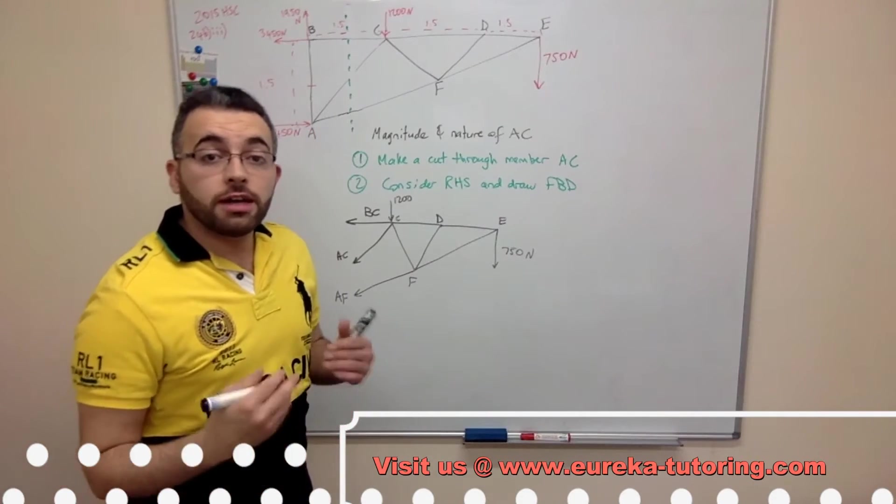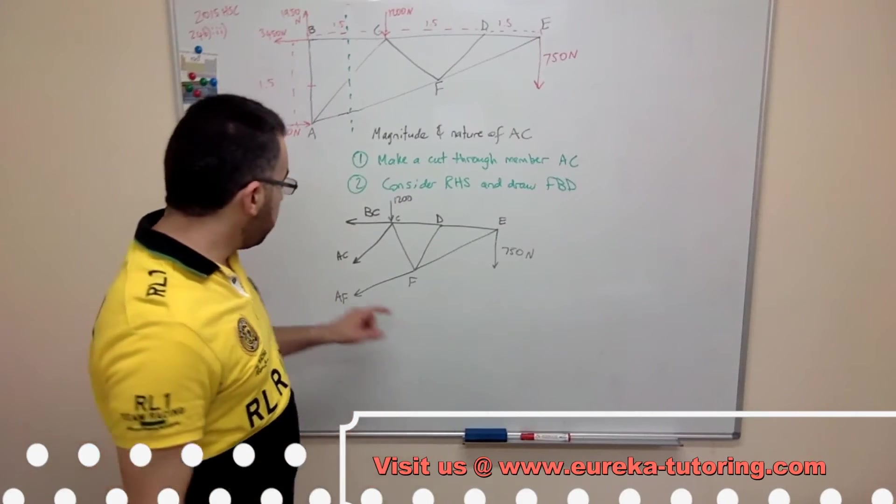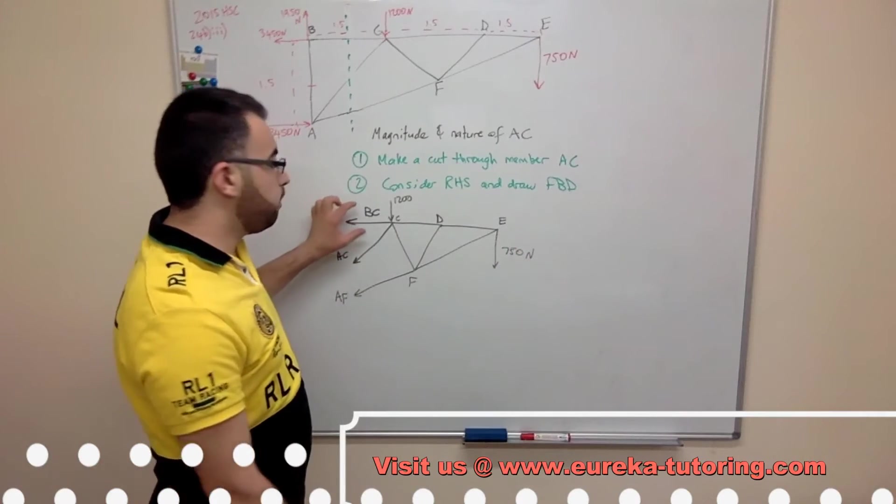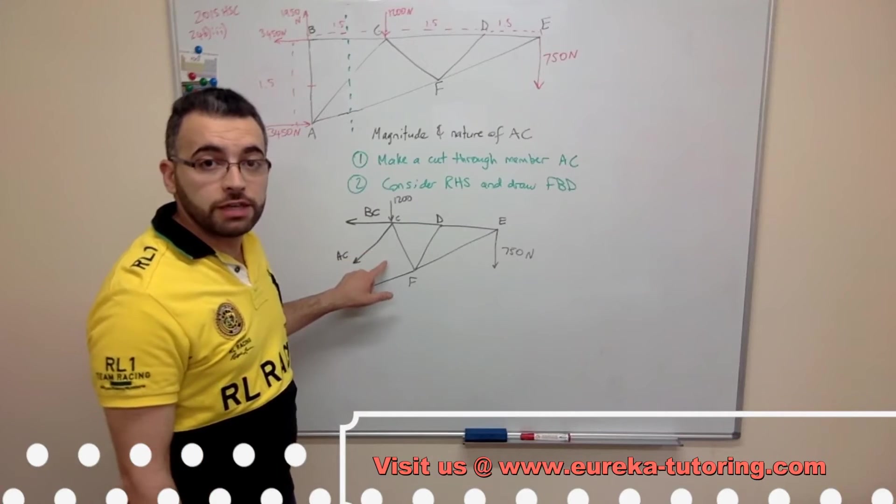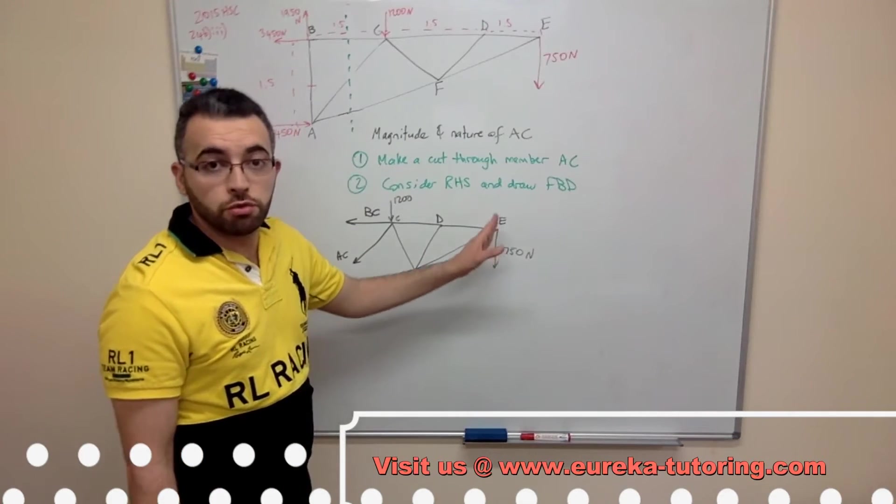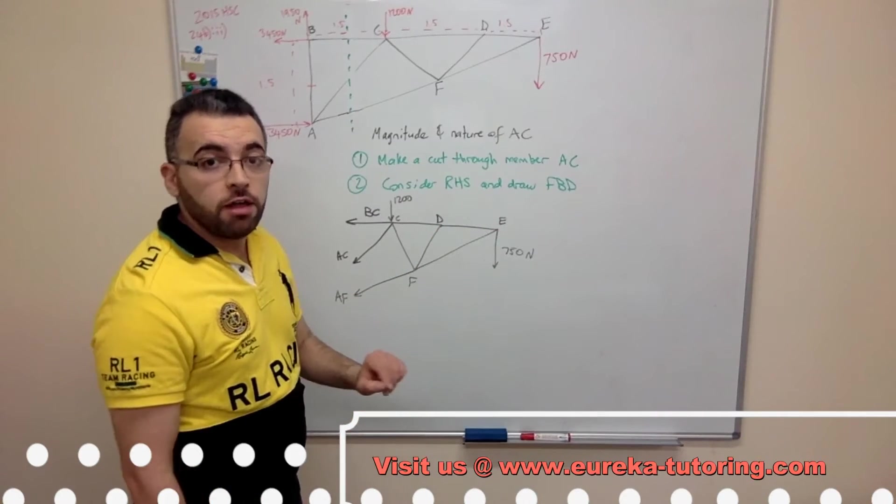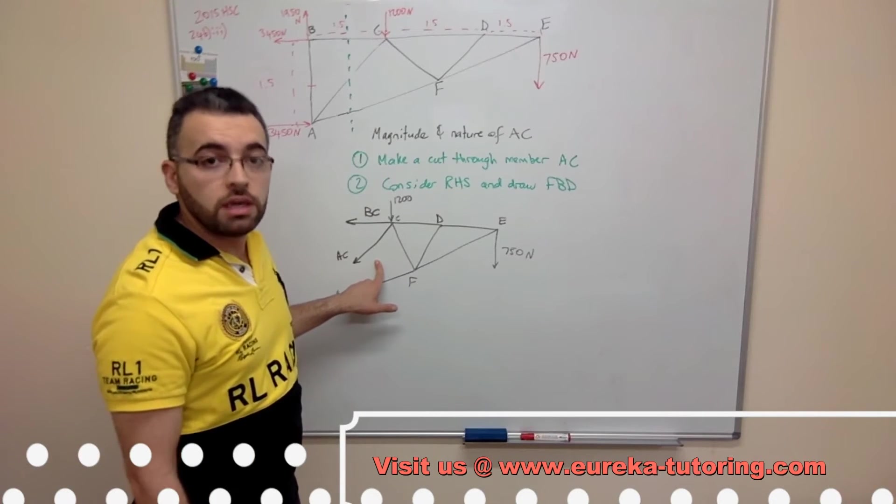Now, I can do some moments about point E. By doing moments about point E, I can get rid of this force AF as it goes through the point, I can get rid of BC because it goes through the point, and I can get rid of the horizontal component of AC as it also goes through the point. Hence these forces will not create a moment. However, the vertical component of AC will create a moment, and that will be our only unknown.